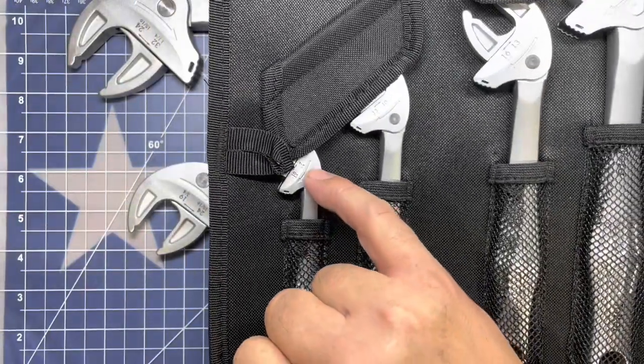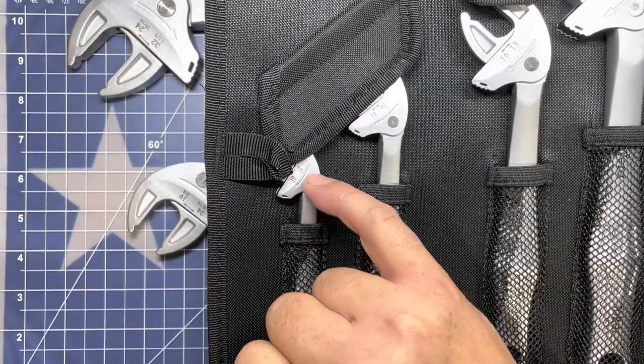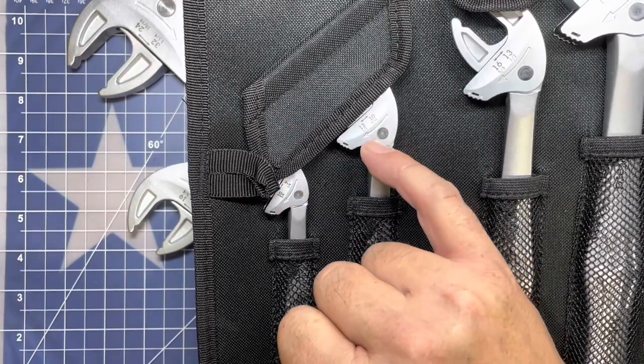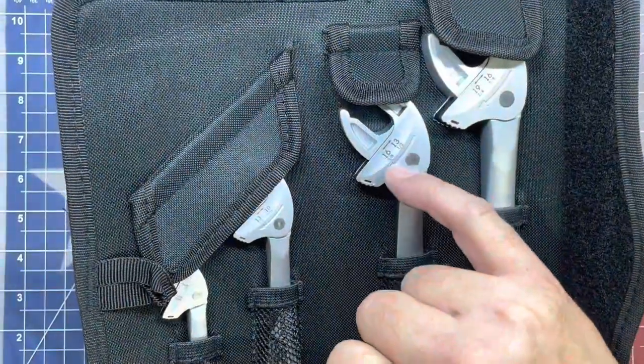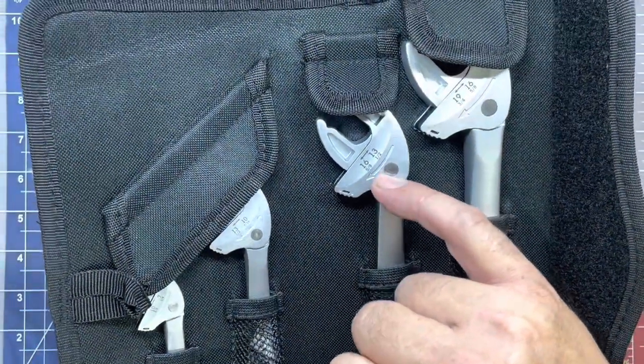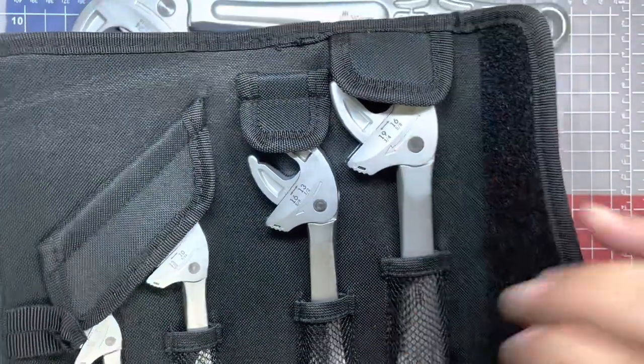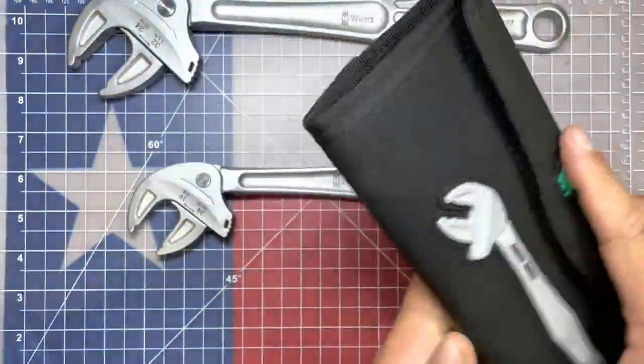So the size ranges on these, first of all, this extra small goes from 7 to 10 millimeter or quarter inch to three eighths. The small is 10 to 13 millimeters, seven sixteenths to half inch. Medium is 13 to 16 millimeters, half inch to five eighths. Large is 16 to 19 millimeters, five eighths to three quarter. I'm going to set these to the side for the moment.